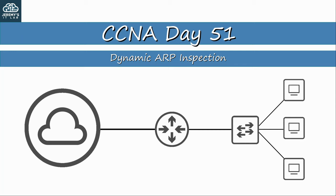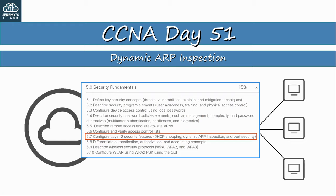In this video we'll cover Dynamic ARP Inspection. Dynamic ARP Inspection, also called DAI, is covered in exam topic 5.7, which says you must be able to configure Layer 2 security features including DHCP snooping, DAI, and port security. We covered DHCP snooping and port security in the previous two videos, so this video will finish up topic 5.7.